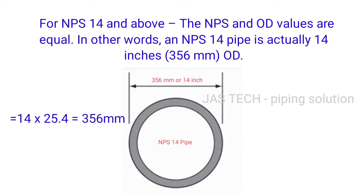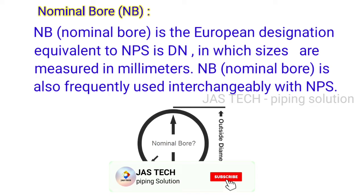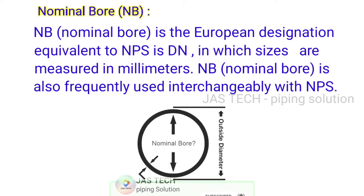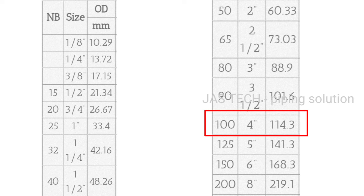For NPS 14 inch and above, the NPS and OD values are equal. In other words, an NPS 14 inch pipe is actually 14 inches, or 356 mm. Nominal Bore (NB): The European designation equivalent to NPS is DN, in which sizes are measured in mm. NB is also frequently used interchangeably with NPS. For example, NB 100 is a 4 inch pipe with an actual OD of 114.3 mm.